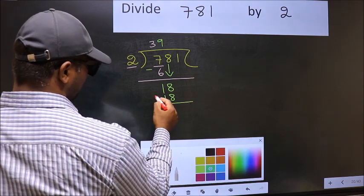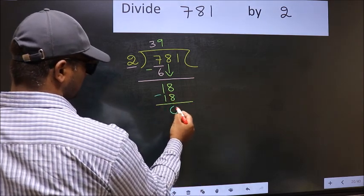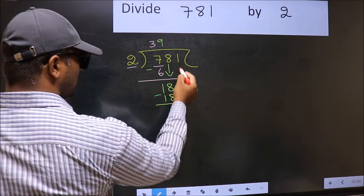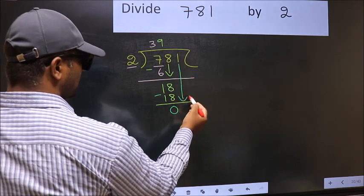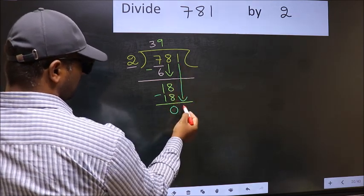Now you subtract. 18 minus 18, 0. After this, you should bring down the beside number. So 1 down.